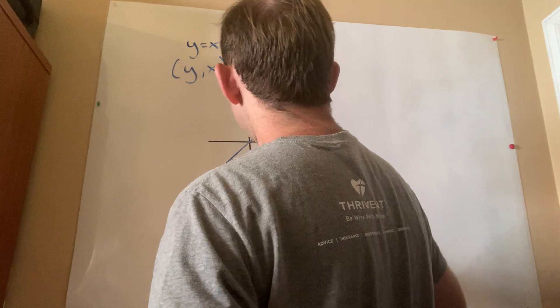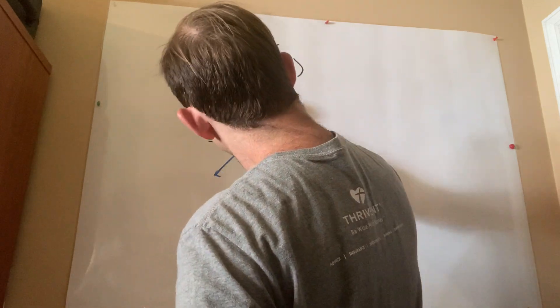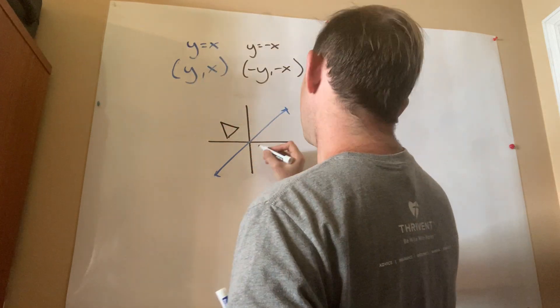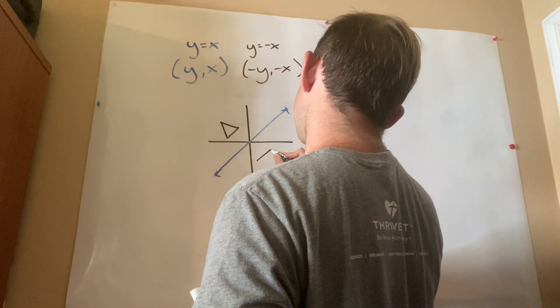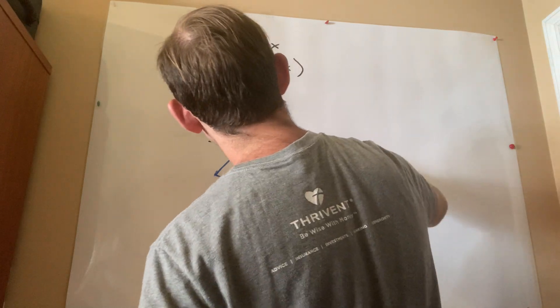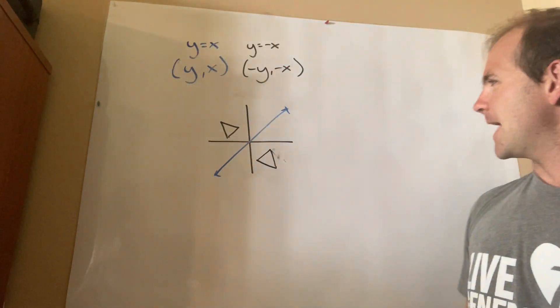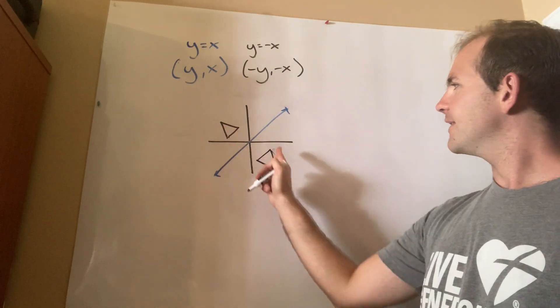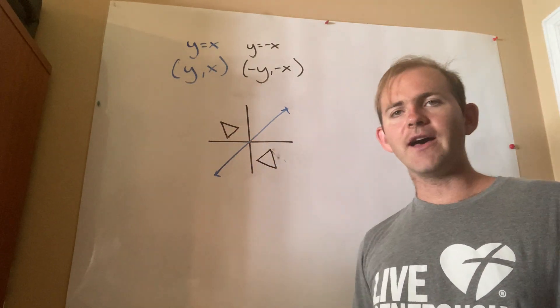Now, if I wanted to flip something over that line, for example, here's a triangle, what it would end up looking like is something like, not like that. Oh my gosh. It would look something like that, right? And notice, it follows the same principles of reflections, where this and this are the same distance away from that line.